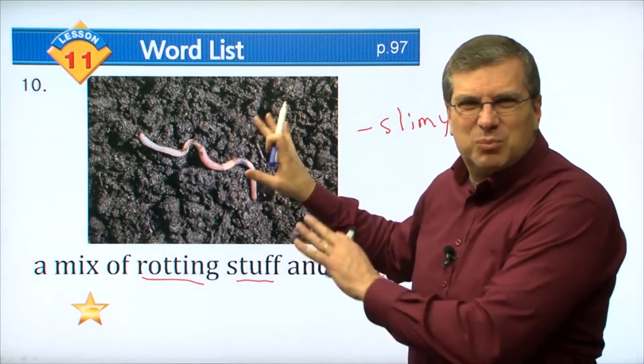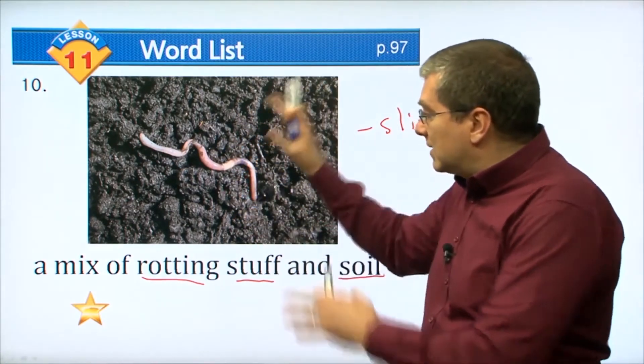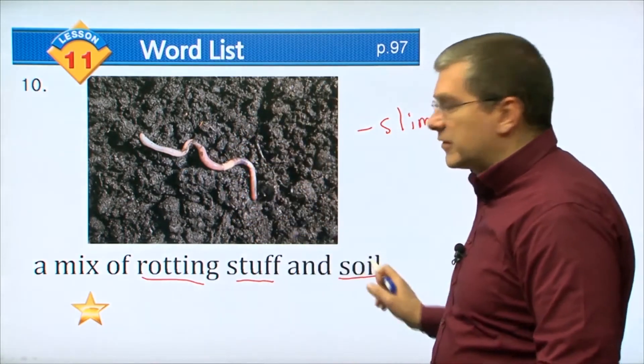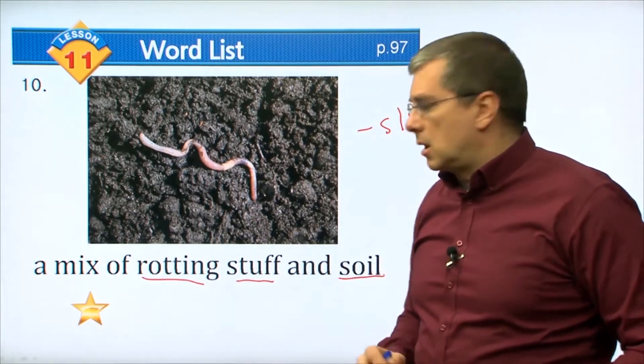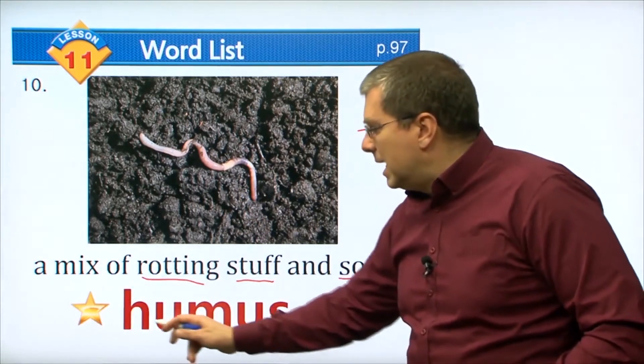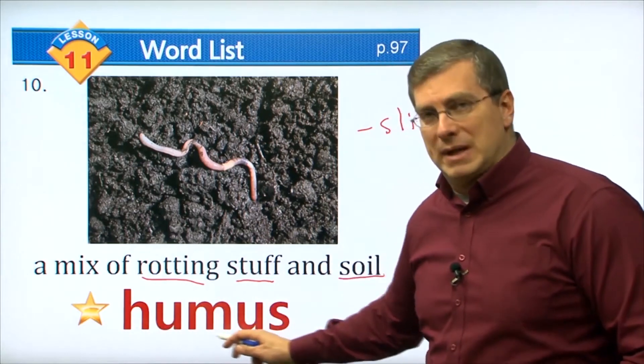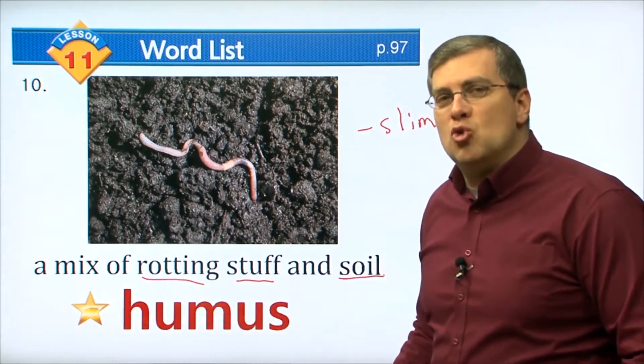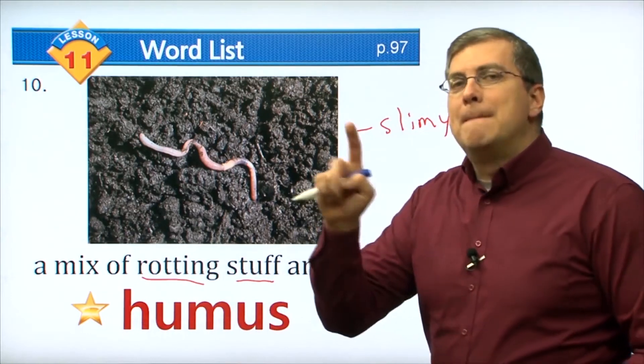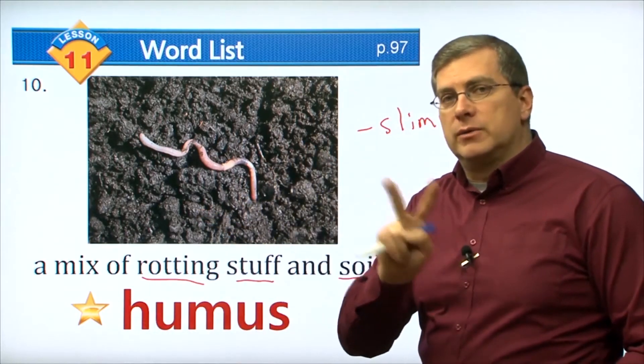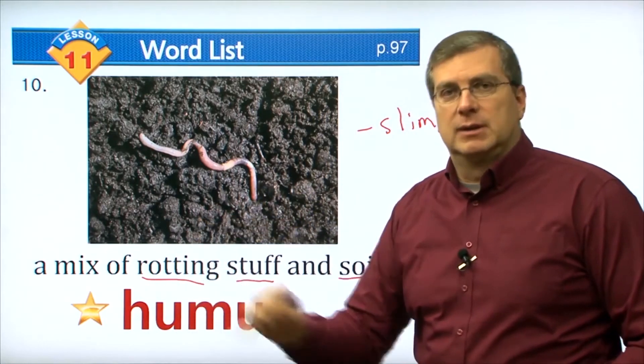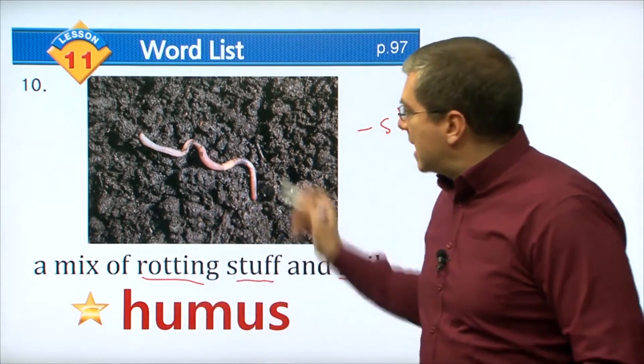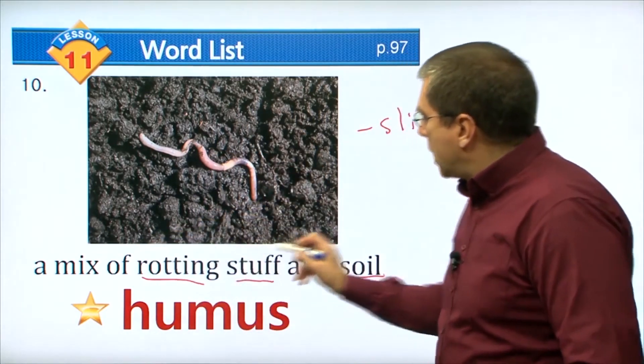There's a special word we use for it. It's a little hard to pronounce, but look at this word: humus. Two sounds: hew-mus. Humus. That is the mix of rotting stuff and soil, good for growing plants.